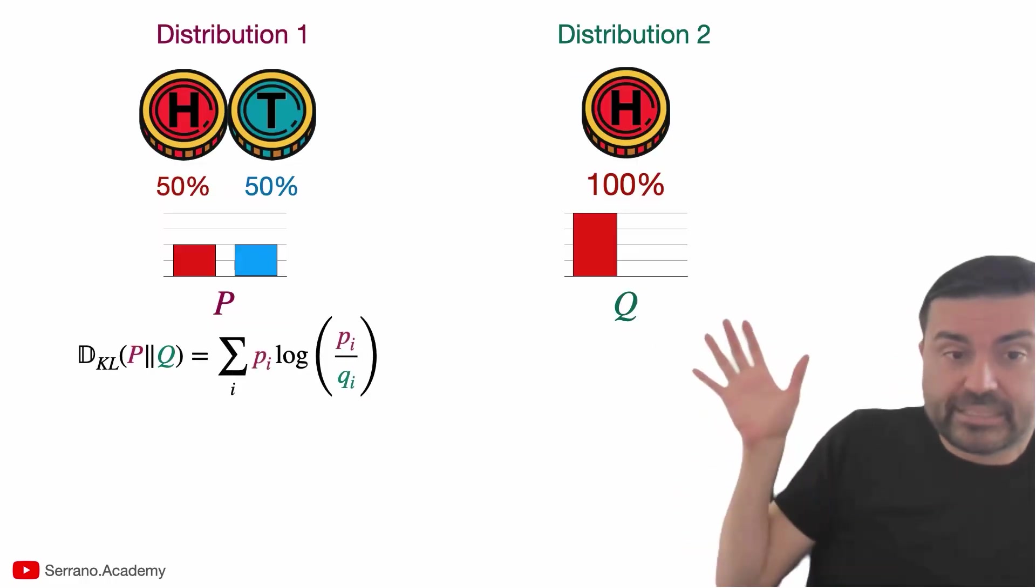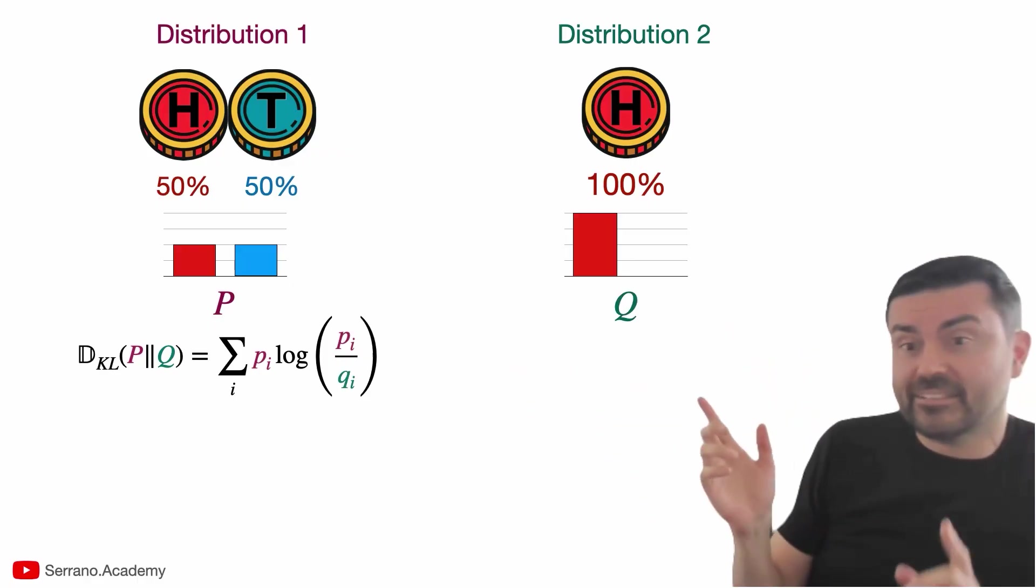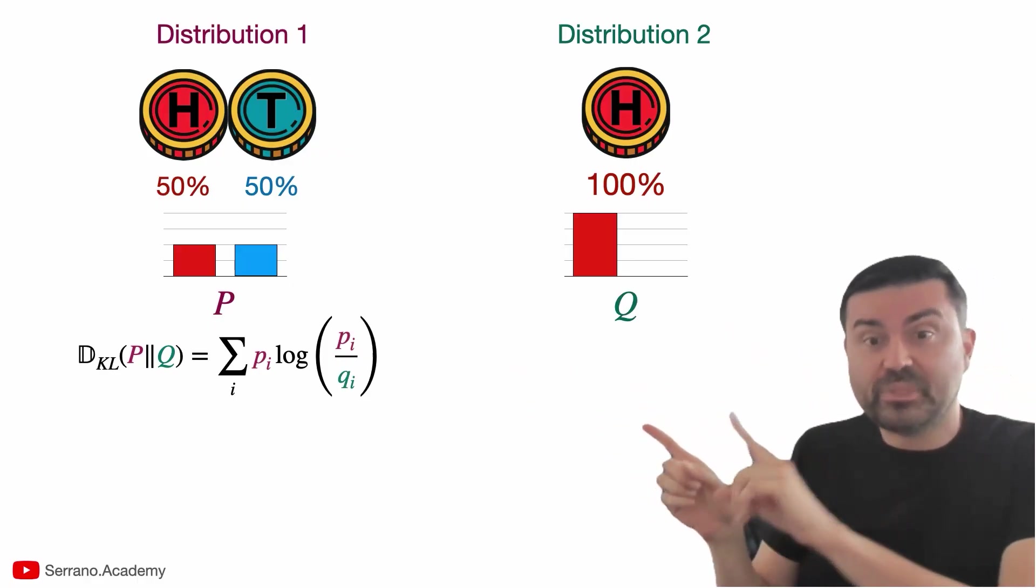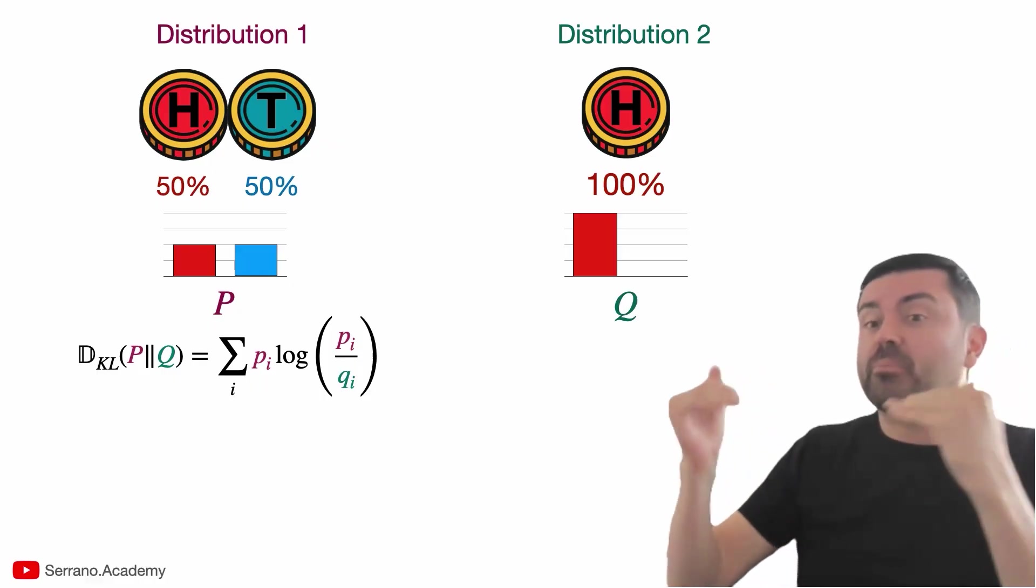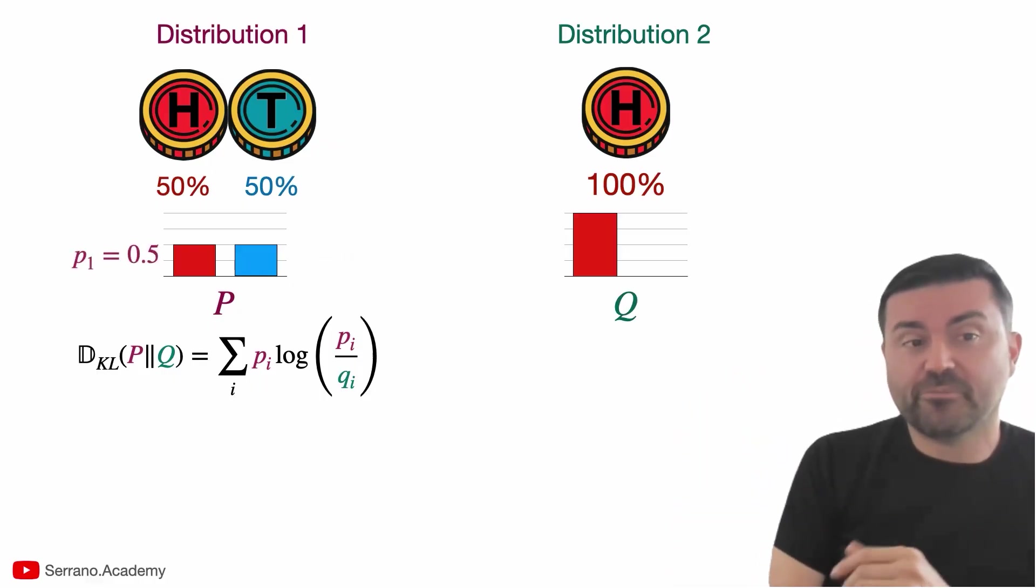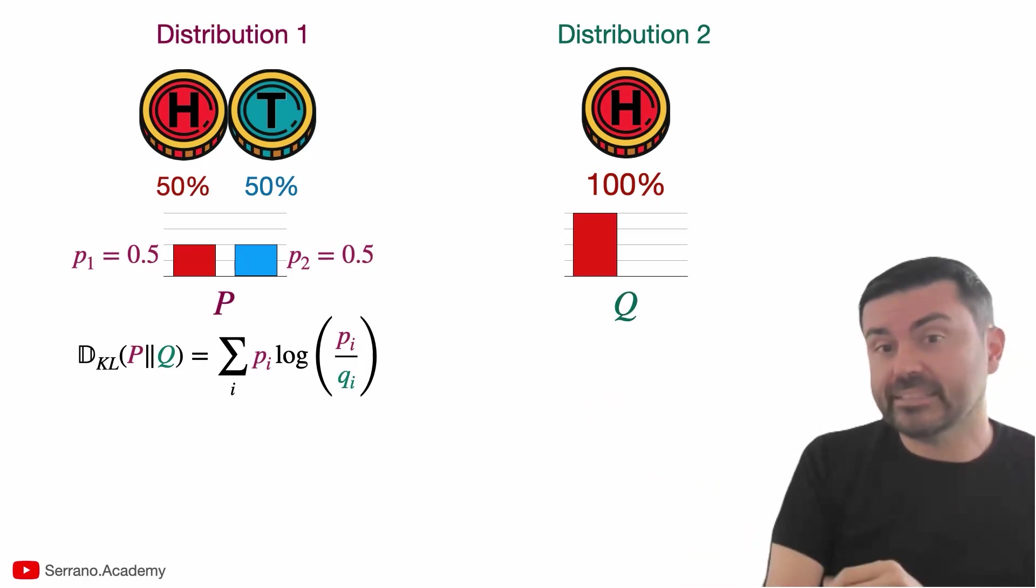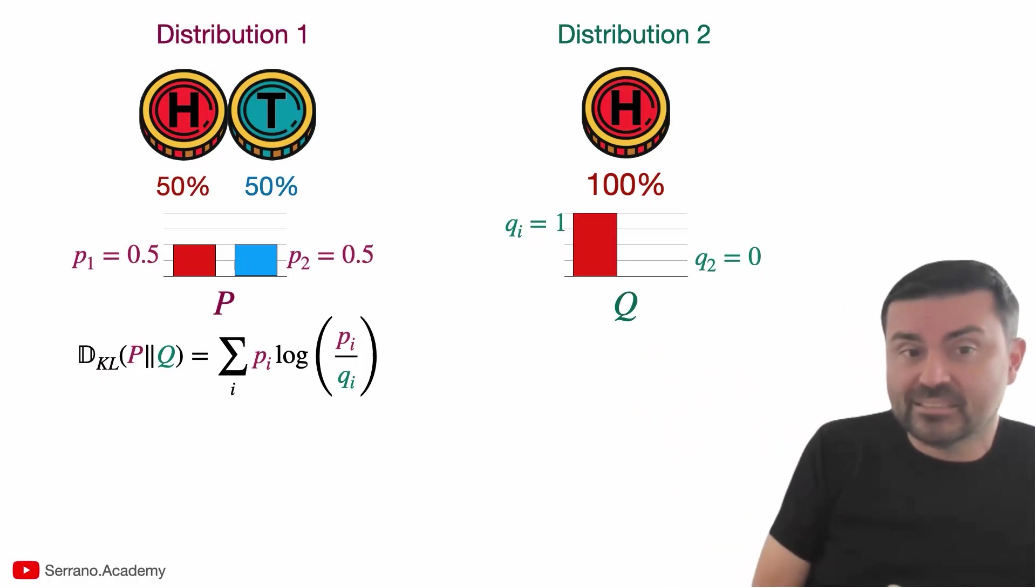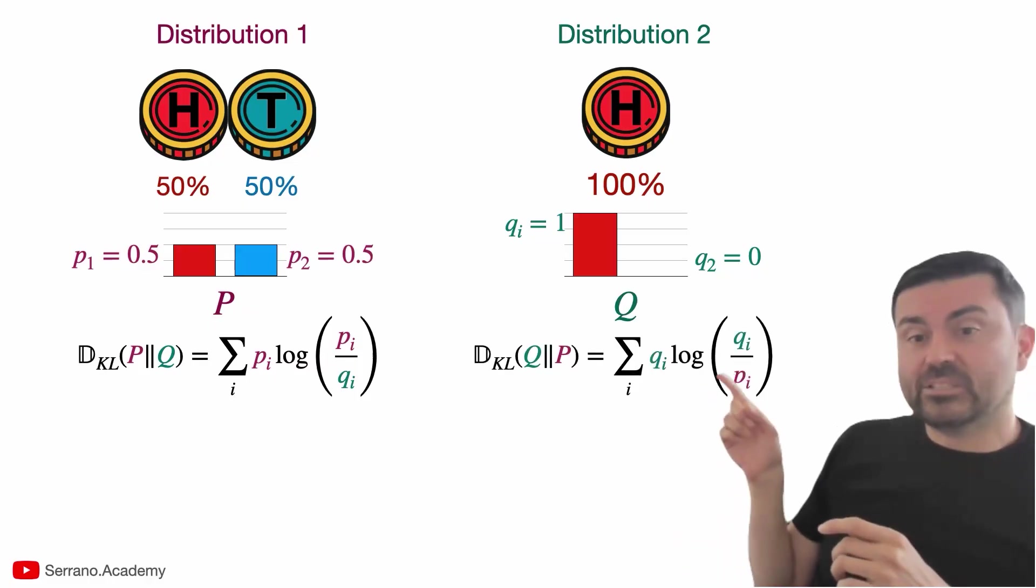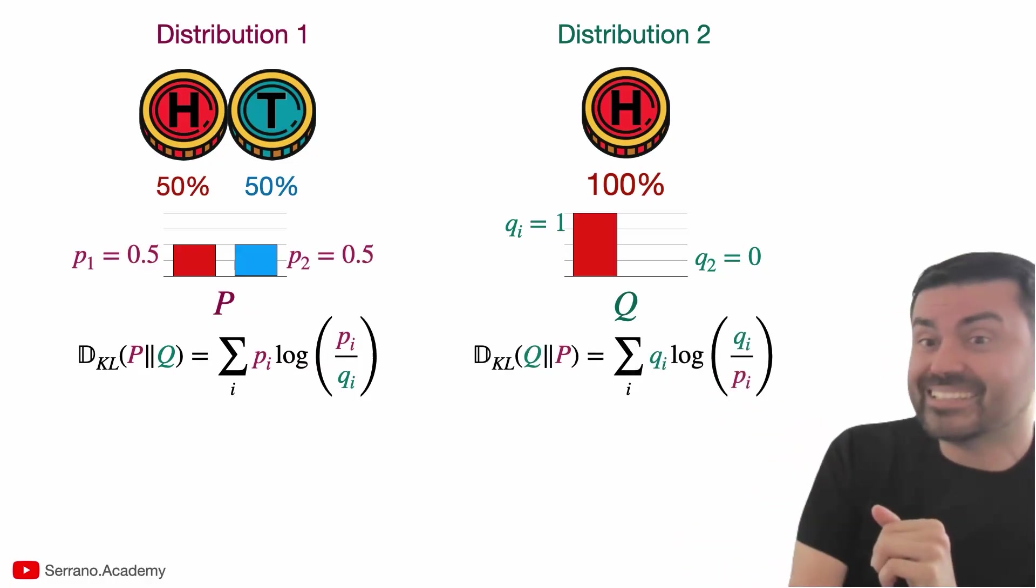So let's look at the numbers. The formula is this one over here for the KL divergence between distribution one, which is P, and distribution two, which is Q. And what are the Pi's and Qi's? They are the probabilities for each of the states. So on the left, we have P1 equals 0.5 for landing on heads and P2 equals 0.5 for landing on tails. And on the one on the right, we have that Q1 is one because it always lands on heads and Q2 is zero for the probability of landing on tails. So we plug in those numbers in here and we're going to plug it into this other formula as well for the KL divergence of Q and P. And we're going to notice that we're going to get different numbers.